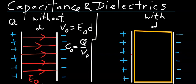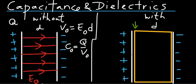Let's look at the capacitor with dielectrics in between the plates. The original charges on the plates will induce charges on the opposite surface of the dielectric. For example, the surface facing the positive plate will have negative charges induced on it.